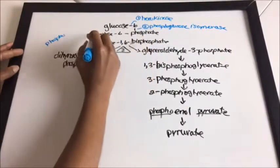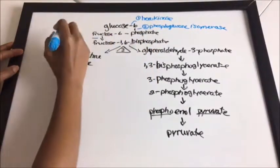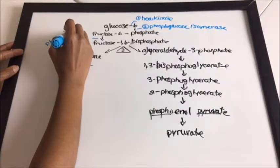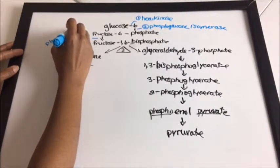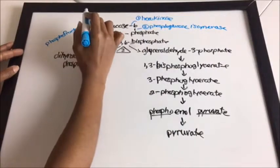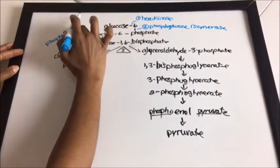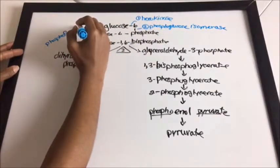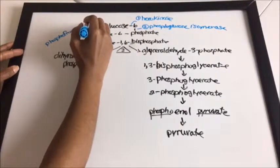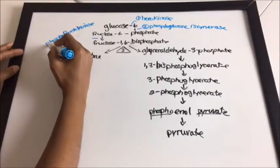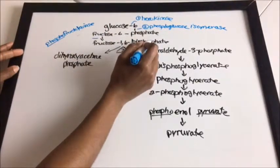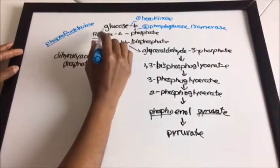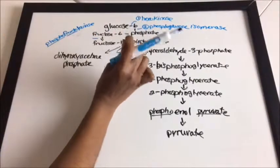Between fructose-6-phosphate and fructose-1,6-bisphosphate, this enzyme is phosphofructokinase. We get 'phospho' from the phosphate, 'fructose' from the name, and then all you have to do is remember 'kinase.'